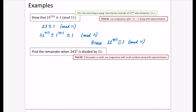The second trick: if the power is small, use congruence with small numbers along with exponentiation. The question is asked in a different way — it says find the remainder when divided by 11. What we're going to try to do is say: what is 343 to the power of 5 congruent to mod 11?